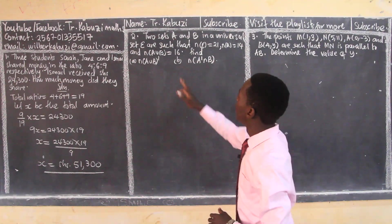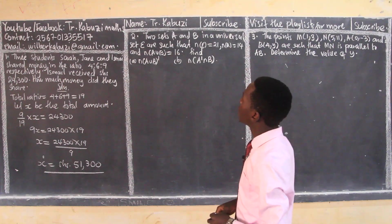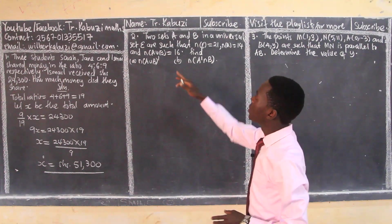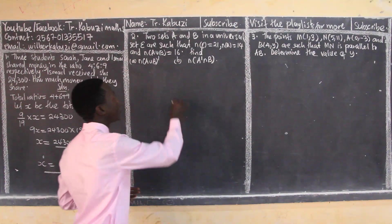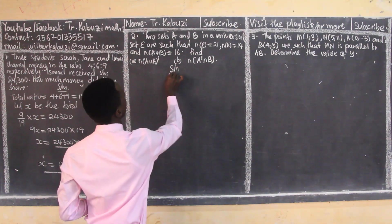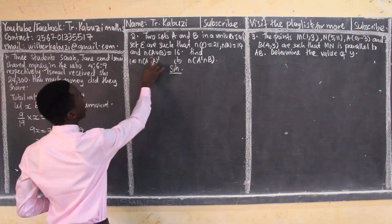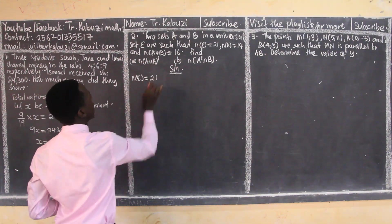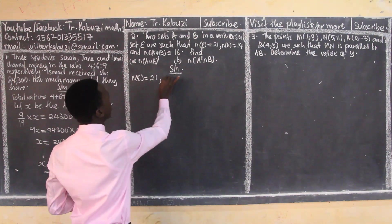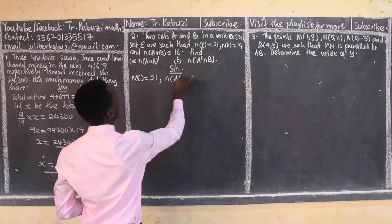It was about sets. Two sets A and B in a universal set. Now we start by extracting all the information. They are giving us the number in the universal is 21, and also the number in A.